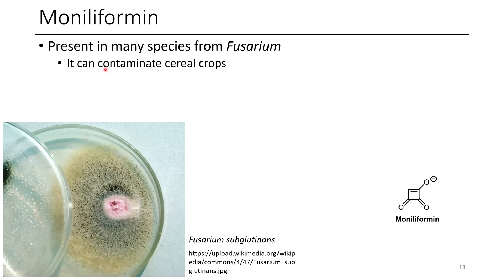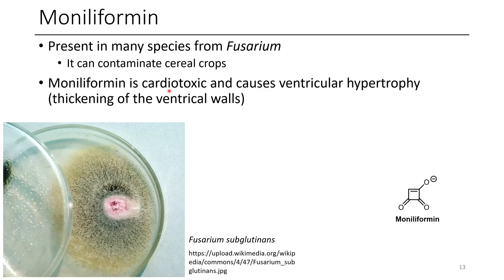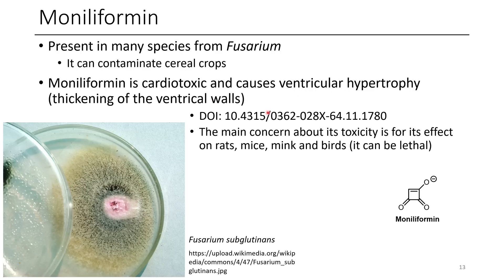The last one we're going to talk about is moniliformin — one of the coolest looking ones, which we also discussed in our cursed molecules tier list. This can contaminate several different cereal crops and is most noteworthy because it's cardiotoxic, causing thickening of the ventricle walls in the heart. It can also be very toxic for rats, mice, mink, and birds — and lethal for many of them. It can be toxic for us too, but often impacts other animals more.